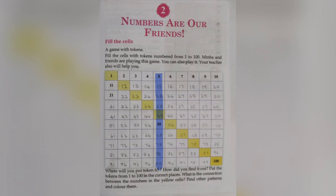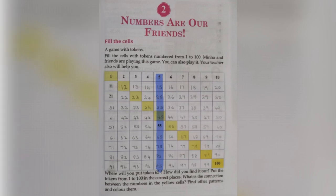Now let's find a new pattern. Let's find the connection between the numbers of the blue cells. The numbers are 5, 15, 25, 35, 45, 55, 65, 75, 85, and 95. The connection between the numbers is that they have a difference of 10.